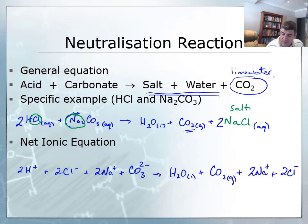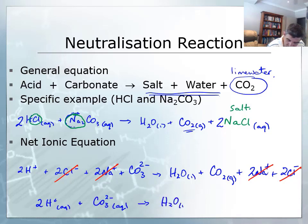So as we've done previously, we then look at our spectator ions. And you can see we have two chloride ions here and two chloride ions here. And we have two sodium ions here and two sodium ions here. Which means that our net ionic equation, this time slightly different to the last one, is 2H plus in solution with a CO3 2 minus in solution produces water and carbon dioxide.